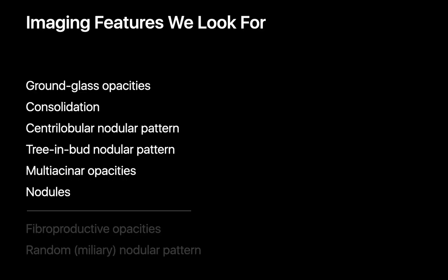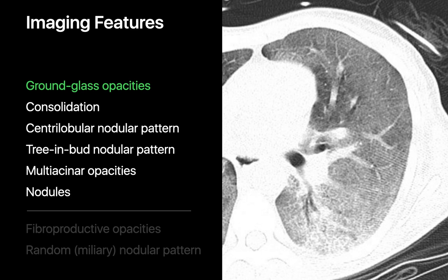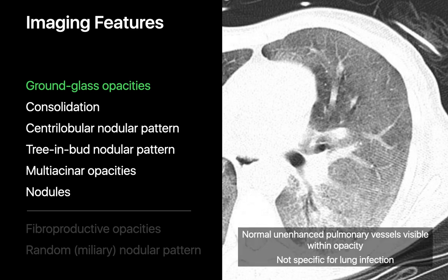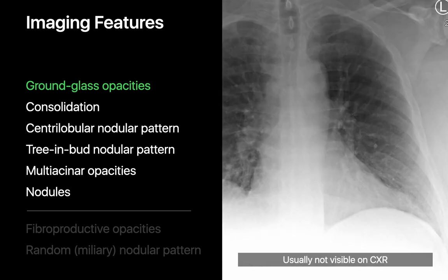When looking for the presence of a lung infection, we're usually looking for six imaging features. We look for ground glass opacities — regions where the lung appears denser but not so dense that underlying anatomy like pulmonary vessels is obscured. One analogy is looking through tinted car windows. Since ground glass opacities can occur in non-infectious lung disorders, they're not specific for lung infection, and the term should generally only appear on CT reports.